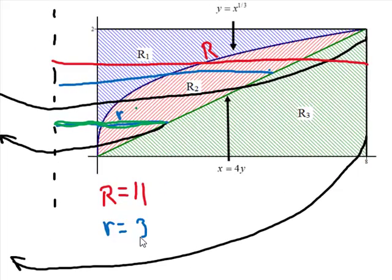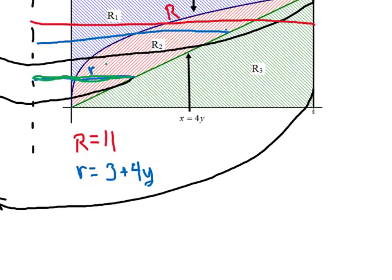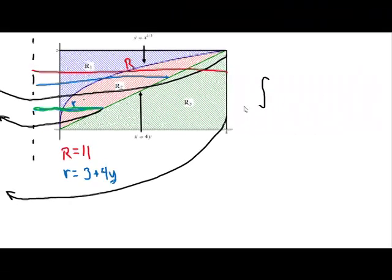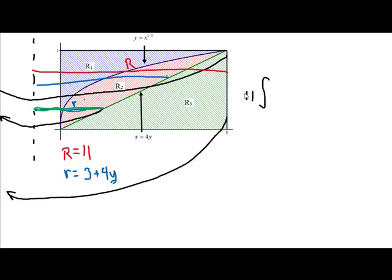We're almost home now. Once you have your big and little radius, it's just a matter of setting up the structure for your integral, which we'll do over here. So, we're going to start our integral for volume. We're going to multiply by pi, an easy one to forget.